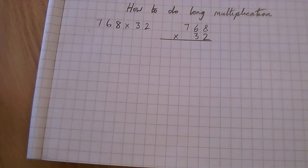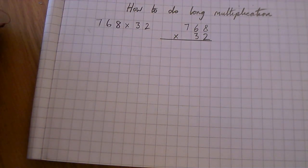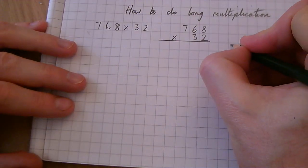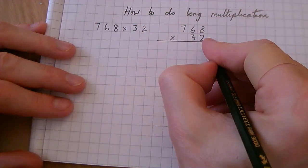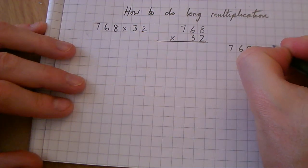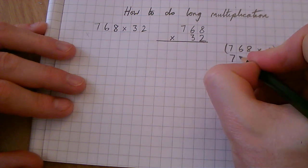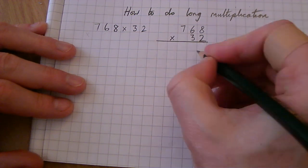Long multiplication is just short multiplication twice and then adding up the answers. So we have 768 times 2 and 768 times 30.